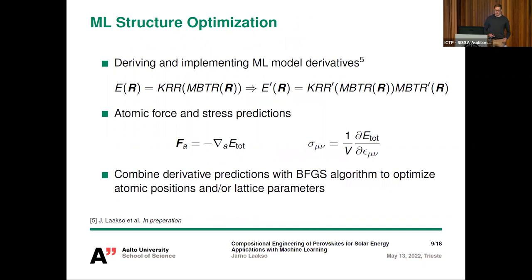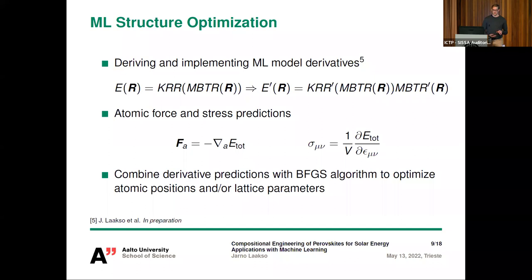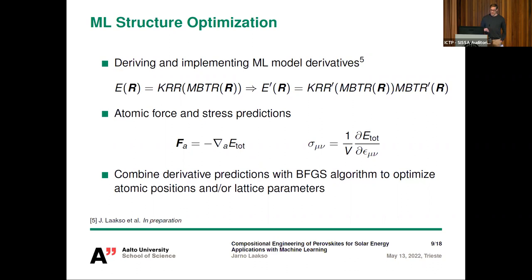Now we have a model that can map atomic structure to energy, but to use it for structure optimization we need to differentiate it. Because our energy predictions are a composite function of KRR and MBTR, we differentiate both components separately. We derived and implemented derivatives of the model with respect to atomic positions and strain components, giving the model the ability to predict atomic forces and stress components, which we combine with the BFGS algorithm to optimize atomic positions and lattice parameters.